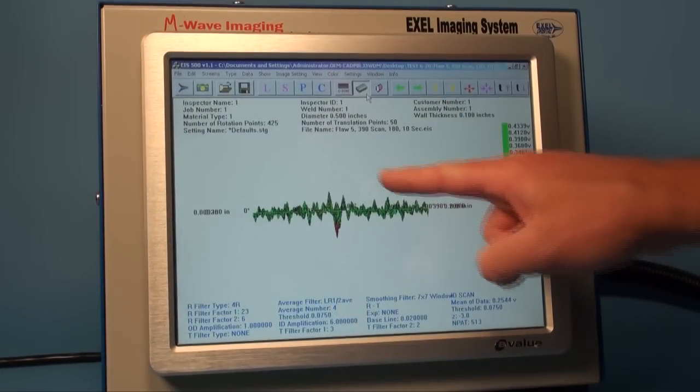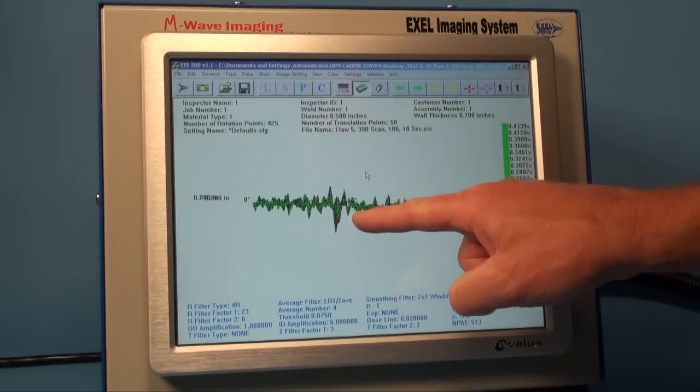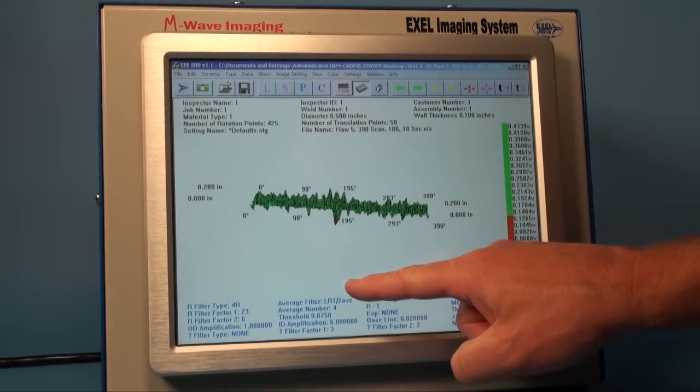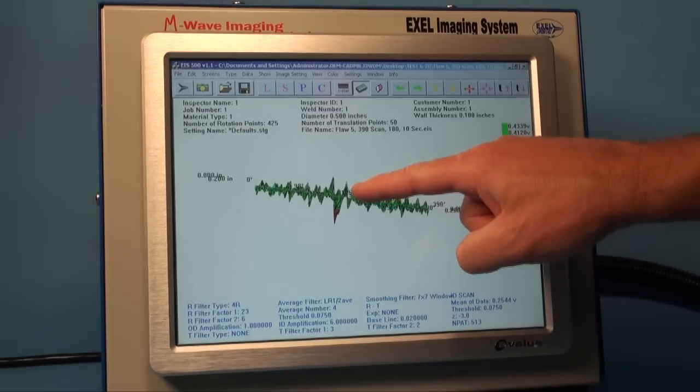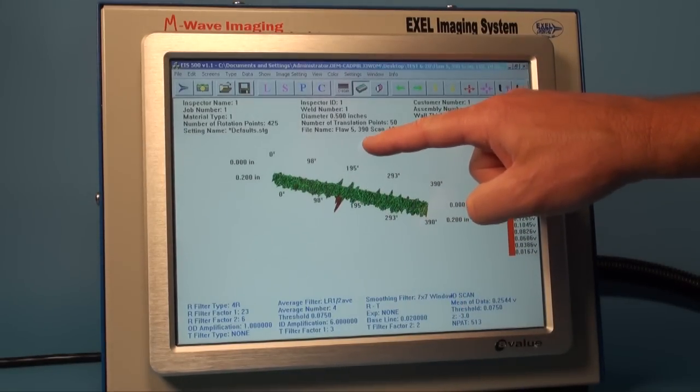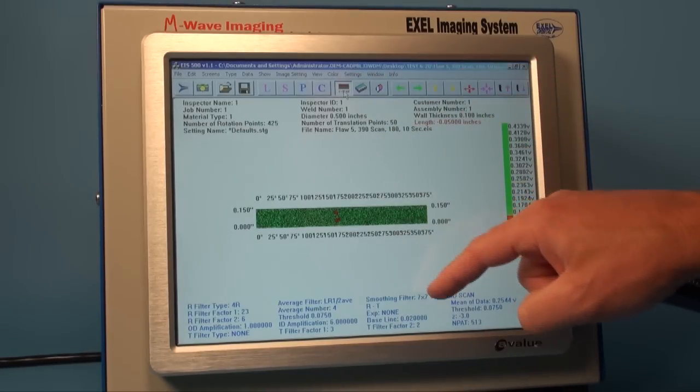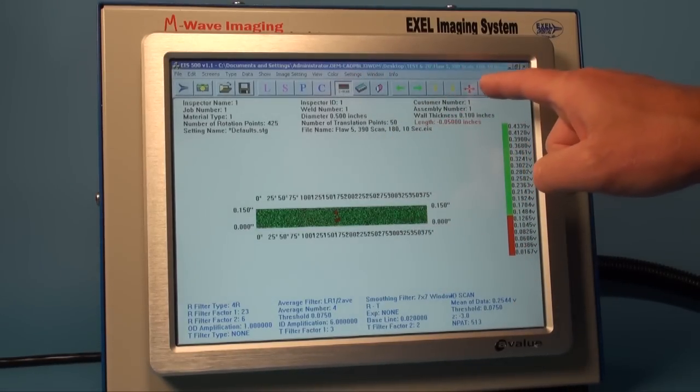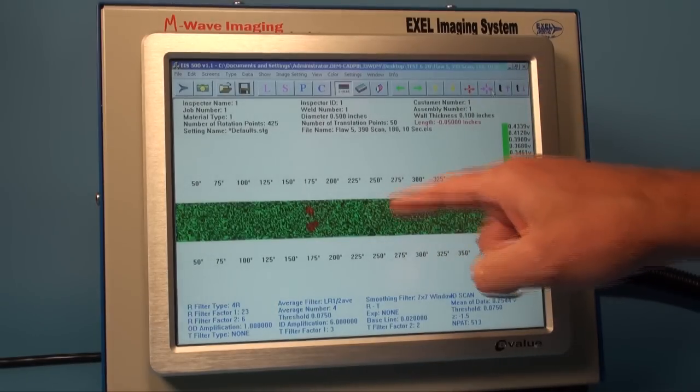Once an image is produced, the flaw is highlighted in red for clear detection. The image can be rotated and viewed in c-scan mode for a clear top view of the flaw, and zooming in or out is easy with the touch of a single button.